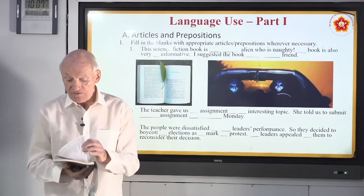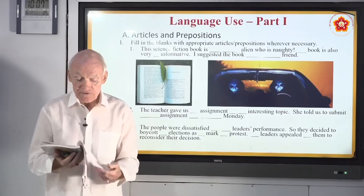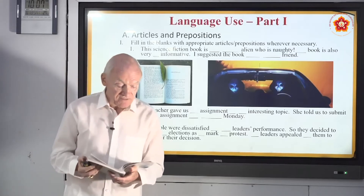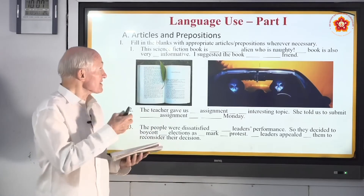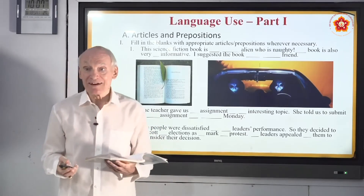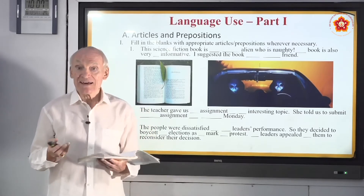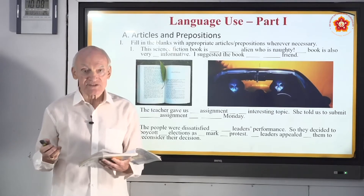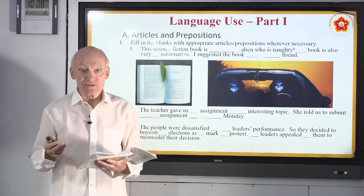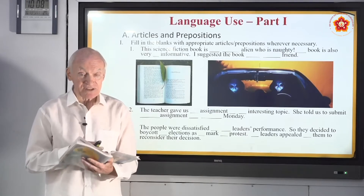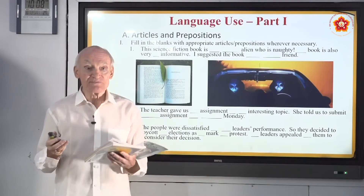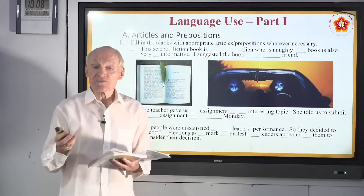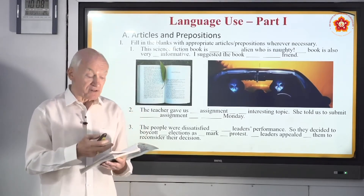In Part 1, we're going to review all of the information that we've learned in the first 11 years. First of all, we have articles — A, An, and The. These are the words used so many times in English. Every story, every poem uses these words a number of times. And if they're used properly, there's a beautiful flow. So let's go over a few simple rules before we go into the work itself.